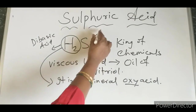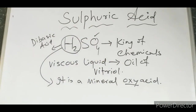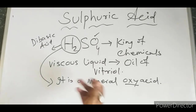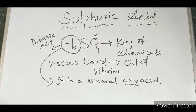Why is it an Oxi Acid? Because oxygen is present. It is produced due to the oxidation of non-metals and the addition of water. So, Sulfuric Acid is the King of Chemicals and is also called Oil of Vitriol.